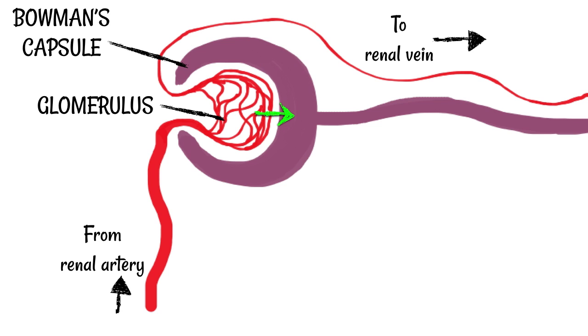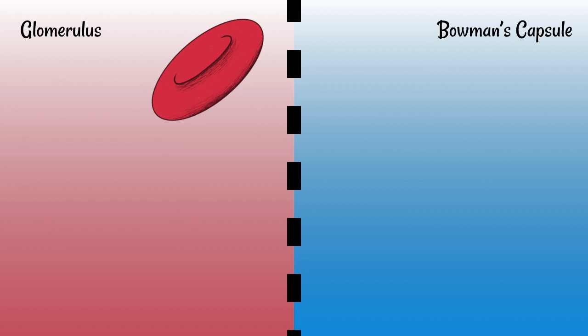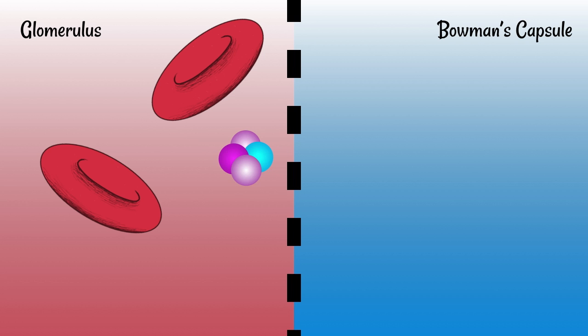Once material is in the Bowman's capsule, it can continue on through the tubule. Let's look more closely at how materials move across from the glomerulus into the Bowman's capsule. There are lots of tiny little spaces between them. These spaces are really small, meaning red blood cells can't get through — they're too large. Similarly, other large structures like proteins are mostly too big to get through. Smaller structures, however — little molecules like urea — are small enough to get through, so urea will transfer into the Bowman's capsule.